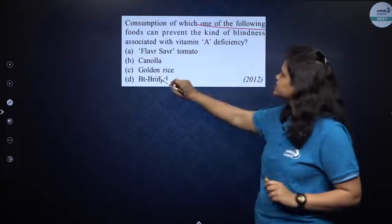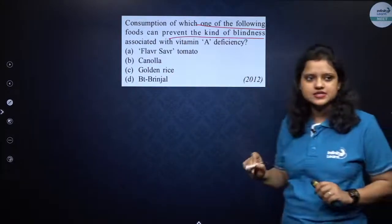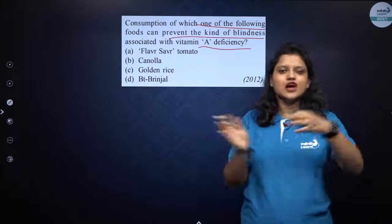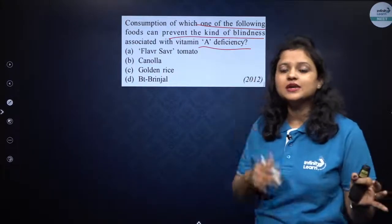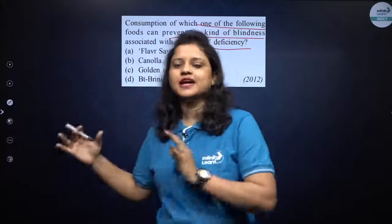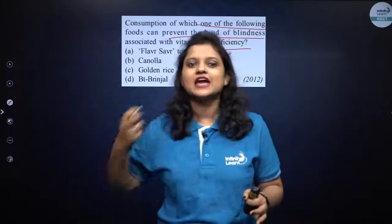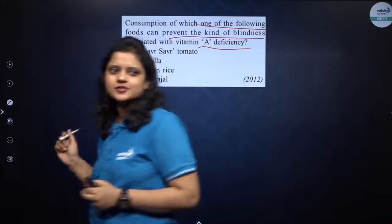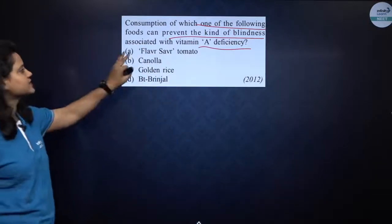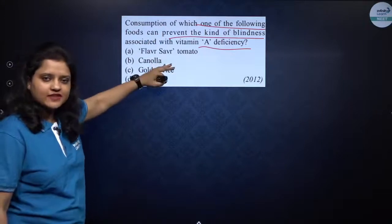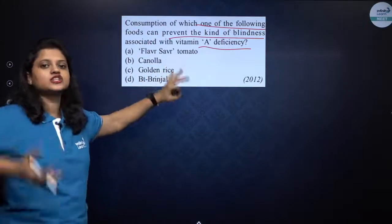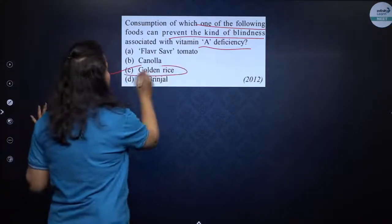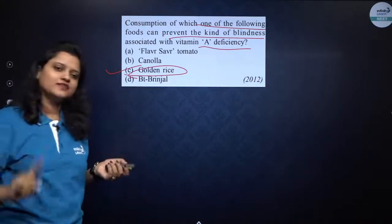Next question from NEET 2012: consumption of which food can prevent the kind of blindness associated with vitamin A deficiency? We discussed that vitamin A-rich rice — golden rice — is rich in beta-carotene, a precursor for vitamin A. Flavr Savr tomato was formed to increase shelf life of tomatoes, not for vitamin A. The correct option is golden rice.